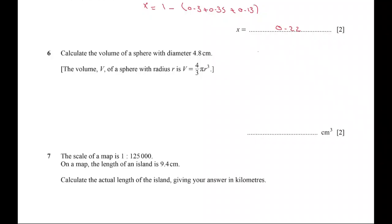Question 6: find the volume of a sphere. The formula for the volume of a sphere is 4/3 times pi times r to the power of 3. We can notice that the given value is the diameter. To find the radius: radius equals diameter divided by 2, so 4.8 divided by 2 equals 2.4.